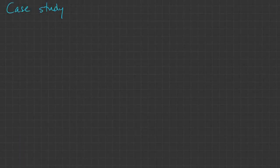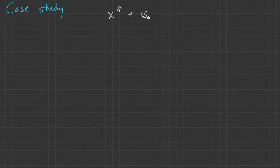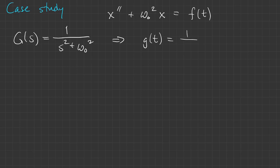Another example, or really a case study, since this is such an important equation, is the undamped oscillator. The transfer function is 1 over s squared plus omega naught squared. So right away we can inverse transform and get 1 over omega naught times the sine of omega naught t.